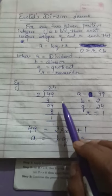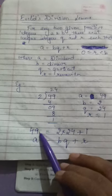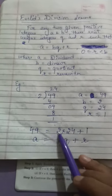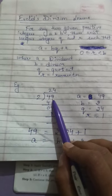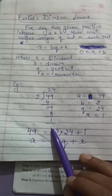This is just the division rule you've already learned, where dividend equals divisor times quotient plus remainder. Here, we know that 49 can be written as 2 times 24 plus 1.